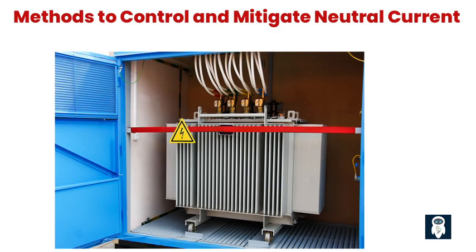Methods to control and mitigate neutral current: 1. Grounding techniques for neutral current management. Proper grounding techniques, such as solid grounding, impedance grounding, or ungrounded systems, can help manage neutral current. Grounding the neutral point provides a low impedance path for unbalanced currents and reduces the risk of equipment damage.